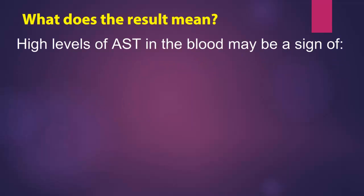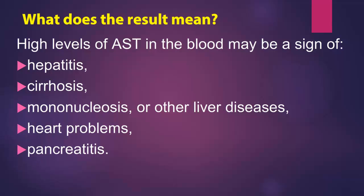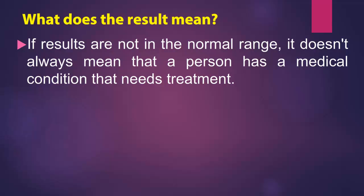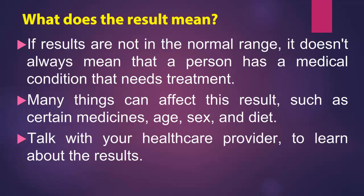High levels of AST in the blood may be a sign of the following conditions: hepatitis, cirrhosis, mononucleosis, or other liver diseases, heart problems, or pancreatitis. If results are not in the normal range, it doesn't always mean that a person has a medical condition that needs treatment. Many things can affect this result, such as certain medicines, age, sex, and diet. Talk with your healthcare provider to learn more about the results.